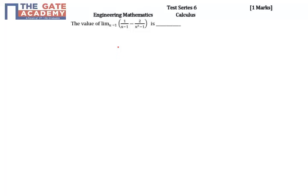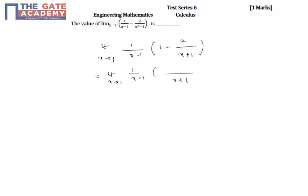In the given problem, we need to find the value at x equal to 1, which is limit x tends to 1. From the given function, I will take x minus 1 common. This gives 1 minus 2 over x plus 1, which is equal to limit x tends to 1 of 1 over x minus 1, times x plus 1.